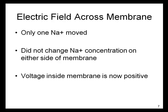How did this happen? In this example, only one sodium ion moved. This movement of only one sodium ion did not change the sodium concentration on either side of the membrane, because it's only one sodium ion. Yet voltage inside the membrane is now positive. This is a rule of thumb: it takes the movement of only a small number of ions across the membrane to change the voltage, but to change the concentration gradient, it would require the movement of a huge number of ions.